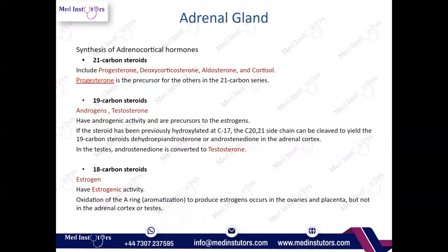An important SBA point: progesterone is the precursor for the others in the 21-carbon series. Progesterone is the first hormone in steroidogenesis, coming from the cholesterol molecule and giving rise to other adrenal hormones. If the exam asks which hormone is a precursor hormone, the answer is progesterone. Remember: 21-carbon steroids are progesterone, deoxycorticosterone, aldosterone, and cortisol.